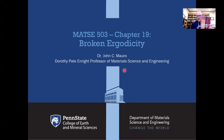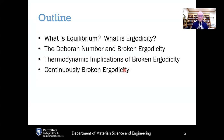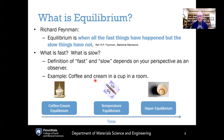Hello and welcome back. We are on chapter 19 of Materials Kinetics, which is Broken Ergodicity. Today we are going to cover: what is equilibrium? What is ergodicity? We will introduce the concept of the Deborah number and discuss broken ergodicity — what happens when ergodicity is lost, why we lose ergodicity, and what are the thermodynamic implications. Then we'll get to the generalized case of continuously broken ergodicity.